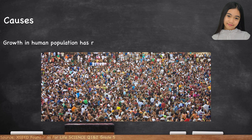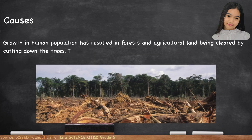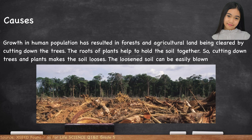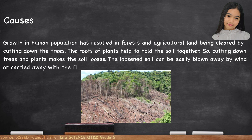Growth in human population has resulted in forest and agricultural land being cleared by cutting down trees. The roots of plants help to hold the soil together; cutting down trees and plants loosens the soil, which can then be easily blown away by wind or carried away with the flow of water.